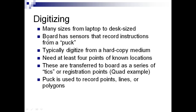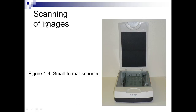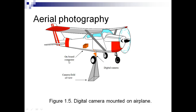Many digitizing table sizes from laptop to desktop are available. The boards have sensors that record instructions from a puck, and we typically digitize from a hard copy medium, needing at least four points of known location as registration ticks. The puck is used to record points, lines, or polygons. You can also scan images using a high-quality scanner. For aerial photography, a camera is mounted on an airplane and takes photographs.